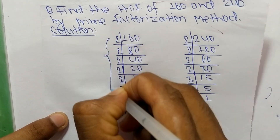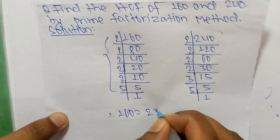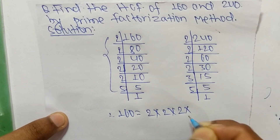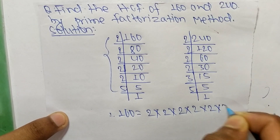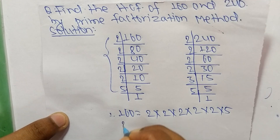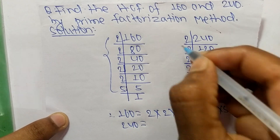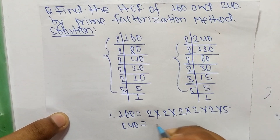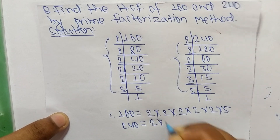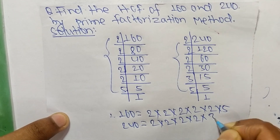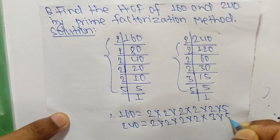From this, we can write: 160 = 2 × 2 × 2 × 2 × 2 × 5, and 240 = 2 × 2 × 2 × 2 × 3 × 5.